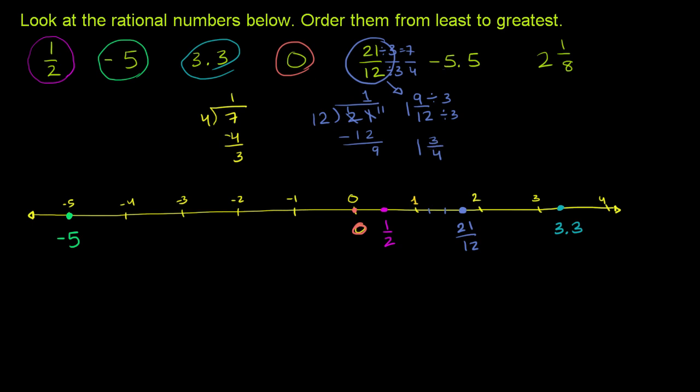And then we have negative 5.5. Negative 5.5, I'll do that in magenta again, running out of colors. Negative 5.5, well, this is negative 5. So negative 5.5 is going to be between negative 5 and negative 6. So let me add negative 6 to our number line right here just to make it clear. So let me go a little bit further.